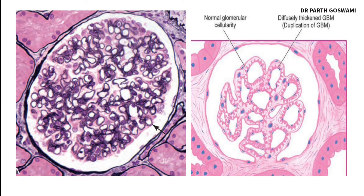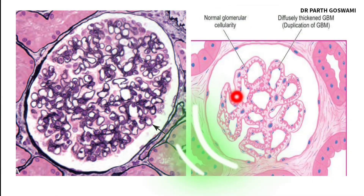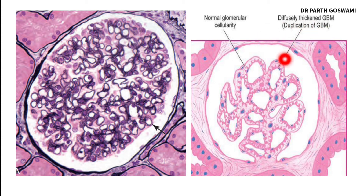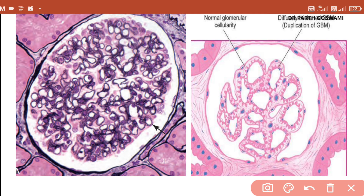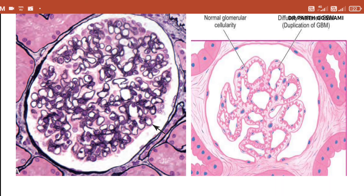This silver stain demonstrates glomerular basement membrane thickening as a black color — you can see a black-colored thickened basement membrane. This is the periodic acid-Schiff stain in which you can see pink-colored thickened basement membrane. Sometimes this condition looks like a duplication of the glomerular basement membrane. This is the spike-and-dome appearance — irregular immunoglobulin and complement deposition causes spikes protruding from the basement membrane.